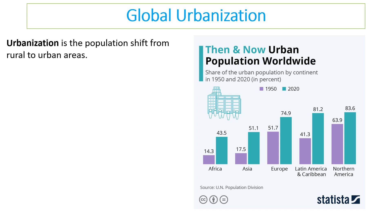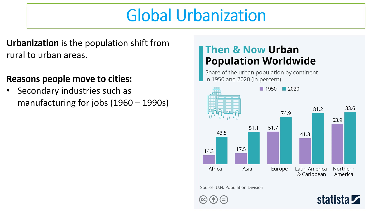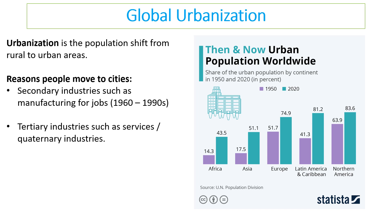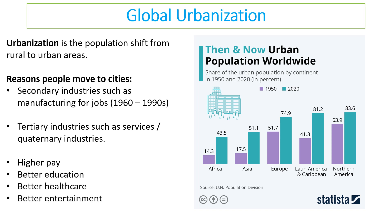The term urbanisation means a shift from rural areas to urban areas. You can see from the graph that in all parts of the world this has happened over time, with increased populations in urban areas. The reason for this is that as the world became more industrialised, secondary industries such as manufacturing drove people to cities, and then tertiary industries such as services also developed there. People perceive cities as offering higher pay, better education, better healthcare, better entertainment, and better communication, including Wi-Fi, broadband, and internet.